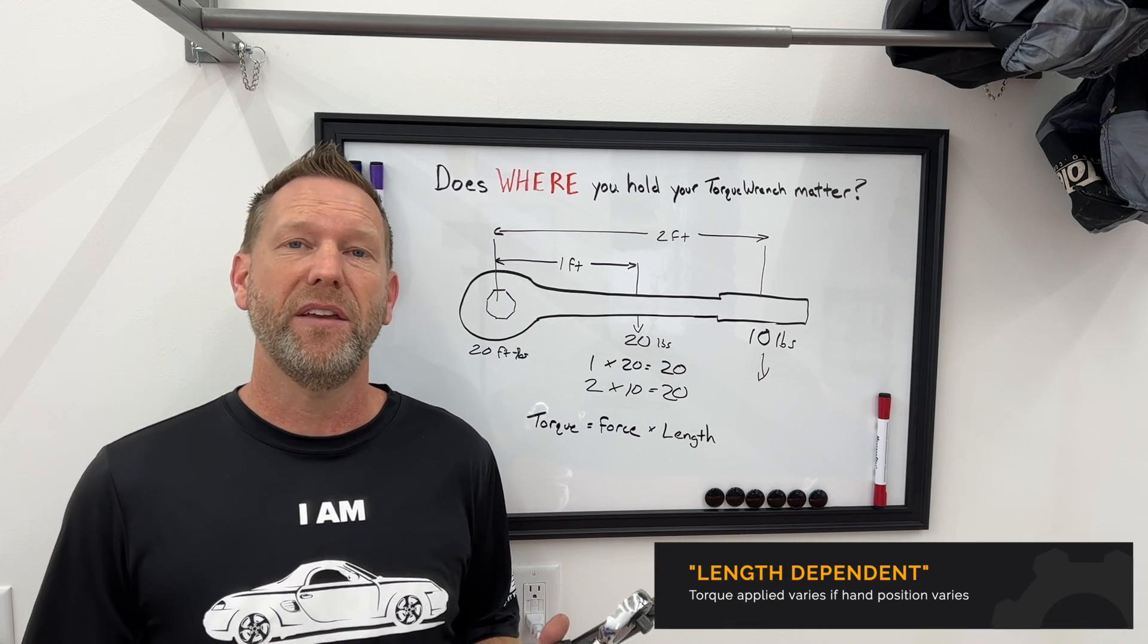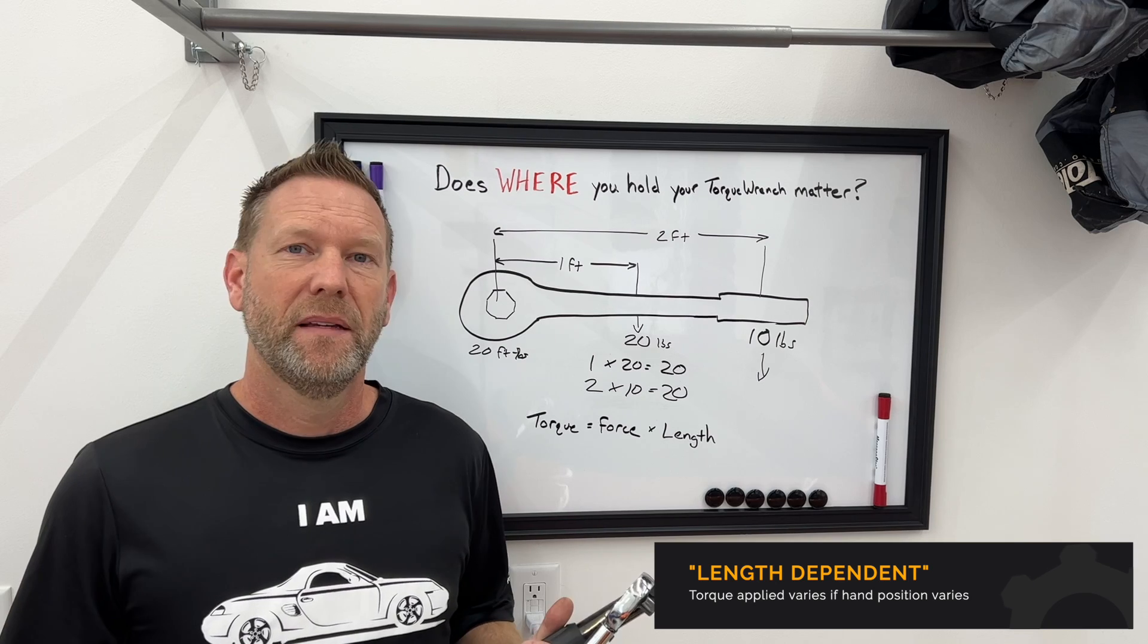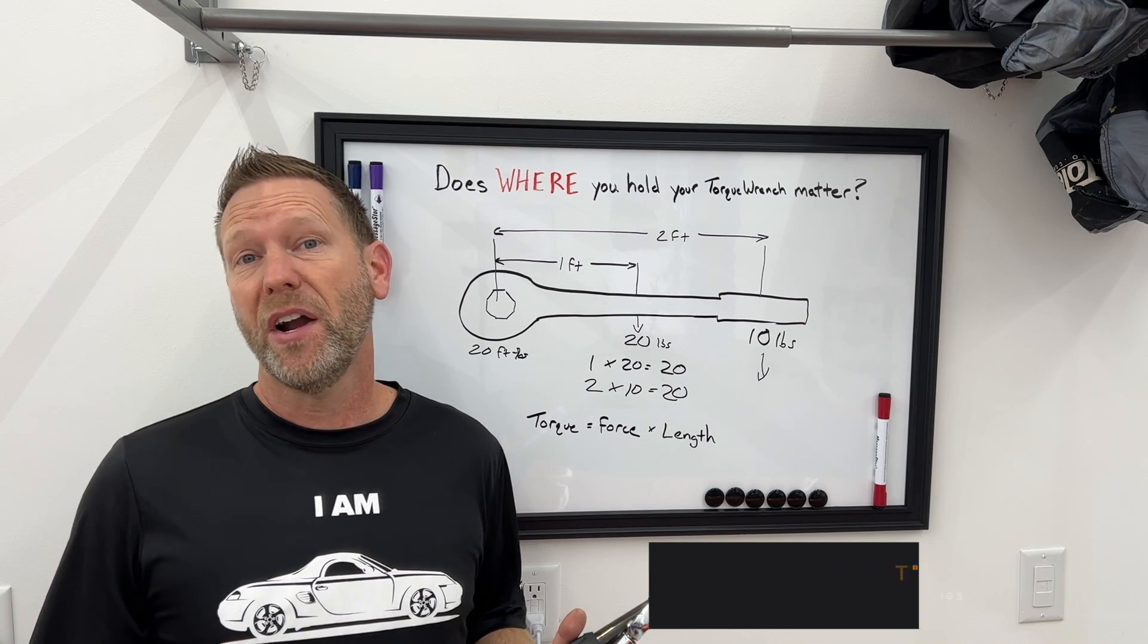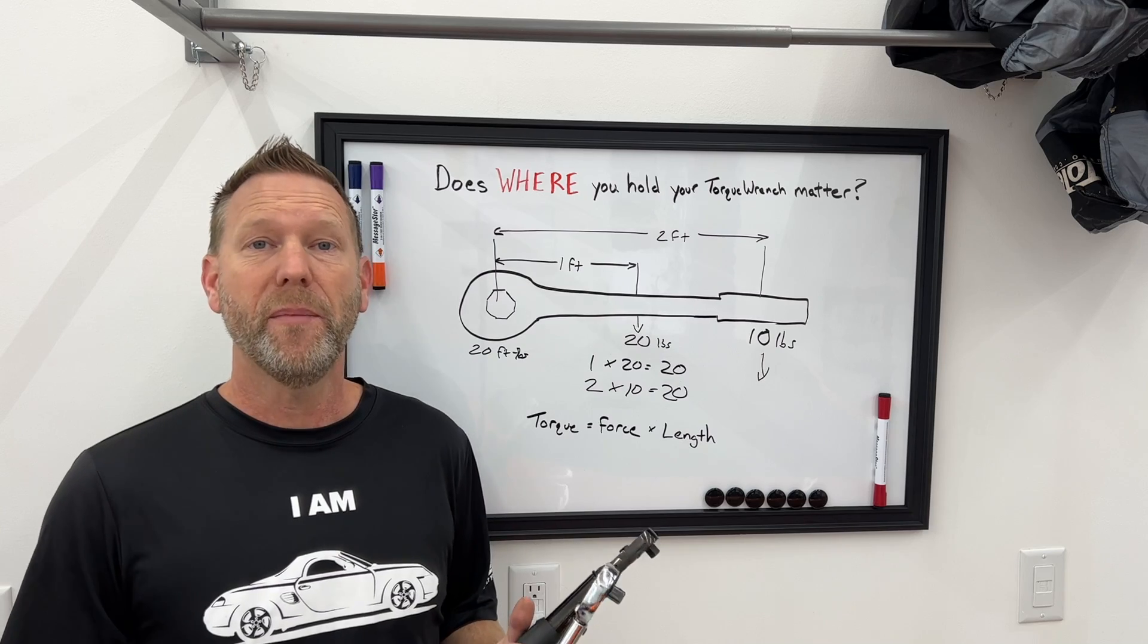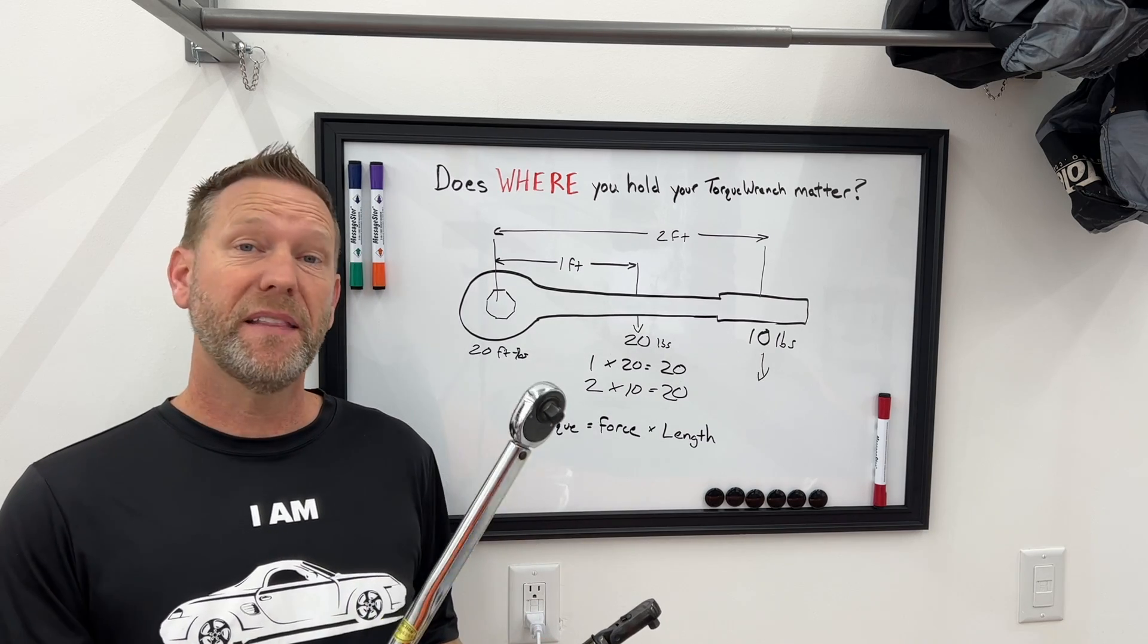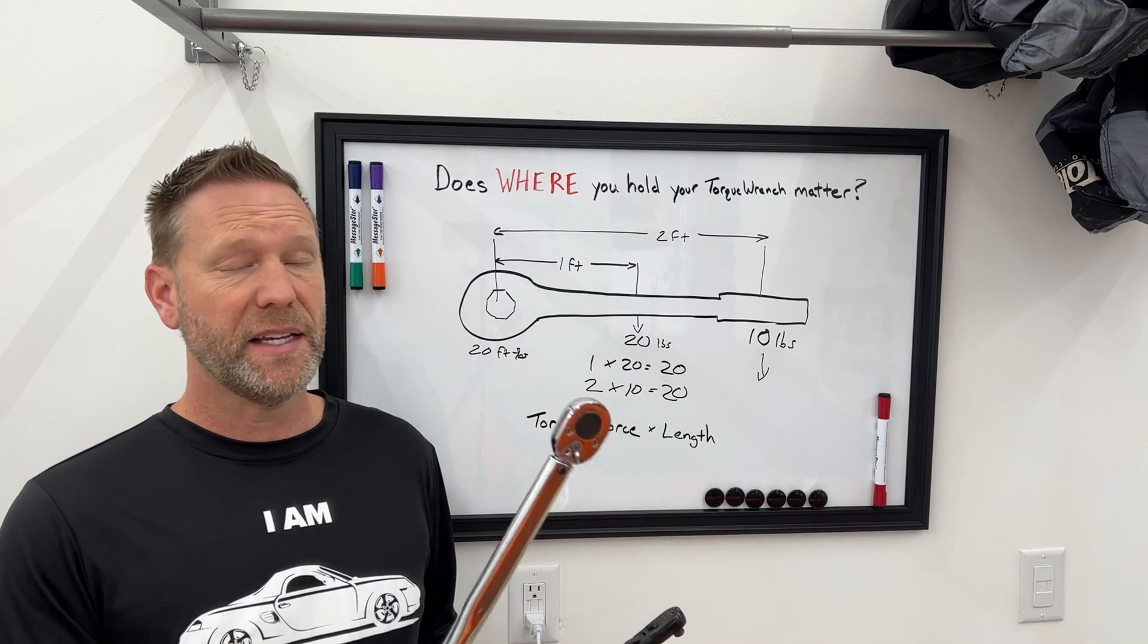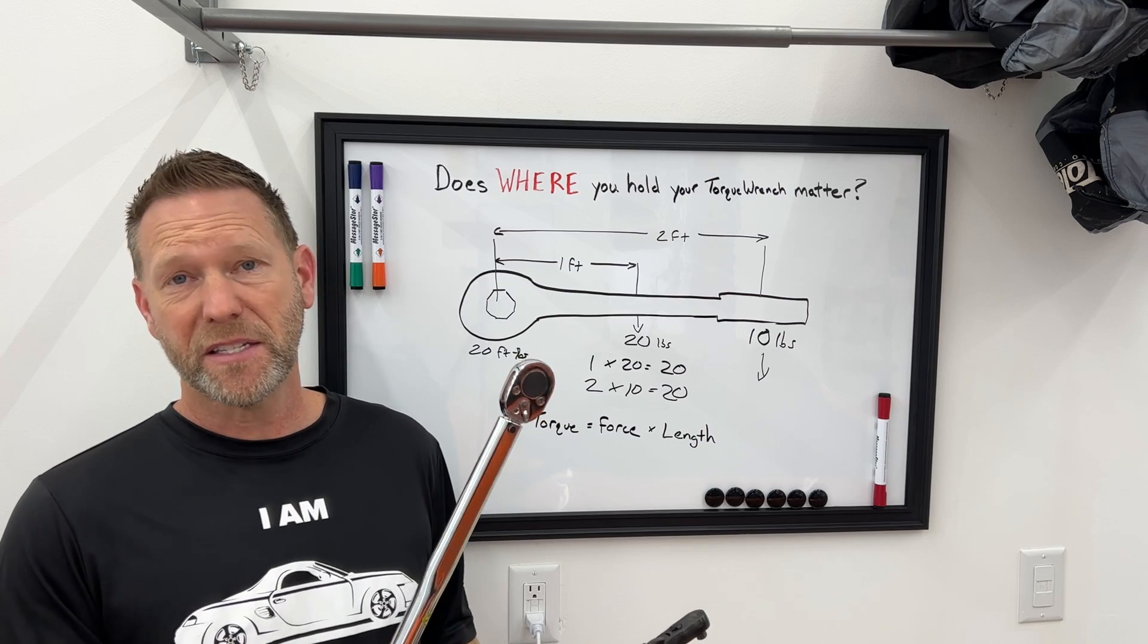And they will also say that they have a length dependent torque wrench. Well, actually they usually don't tell you that. You have to research and figure that out yourself. But some torque wrenches supposedly are not length dependent, where it actually doesn't matter where you hold them. For my research, the most common length dependent type is the click style.